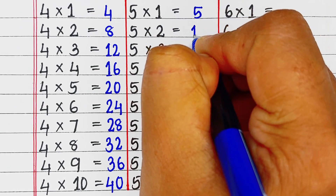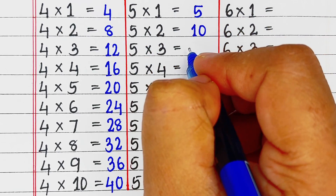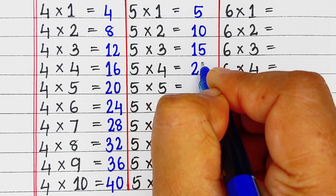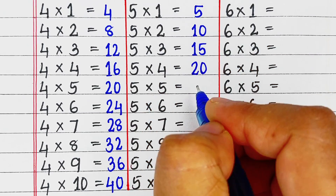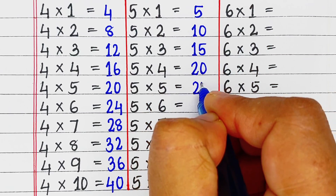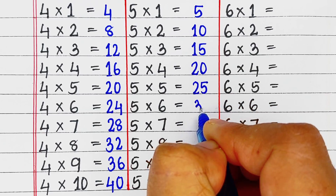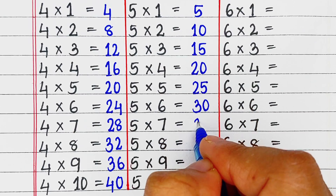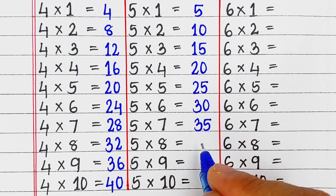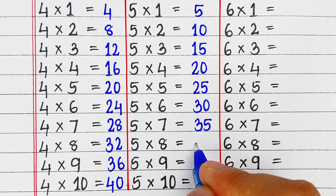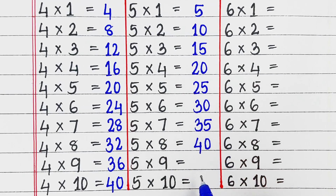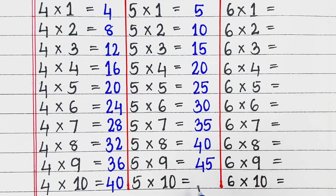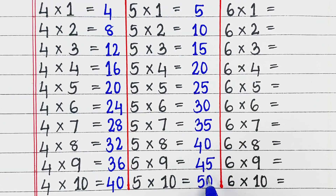Next is table of 5. 5 fours are 20, 5 fives are 25, 5 sixes are 30, 5 sevens are 35, 5 eights are 40, 5 nines are 45, 5 tens are 50.